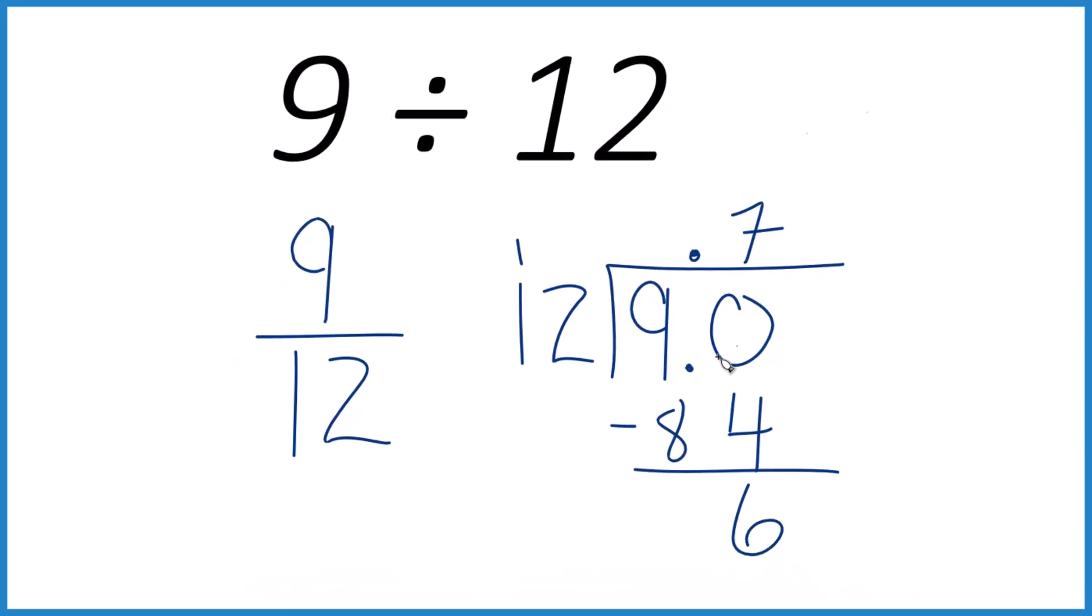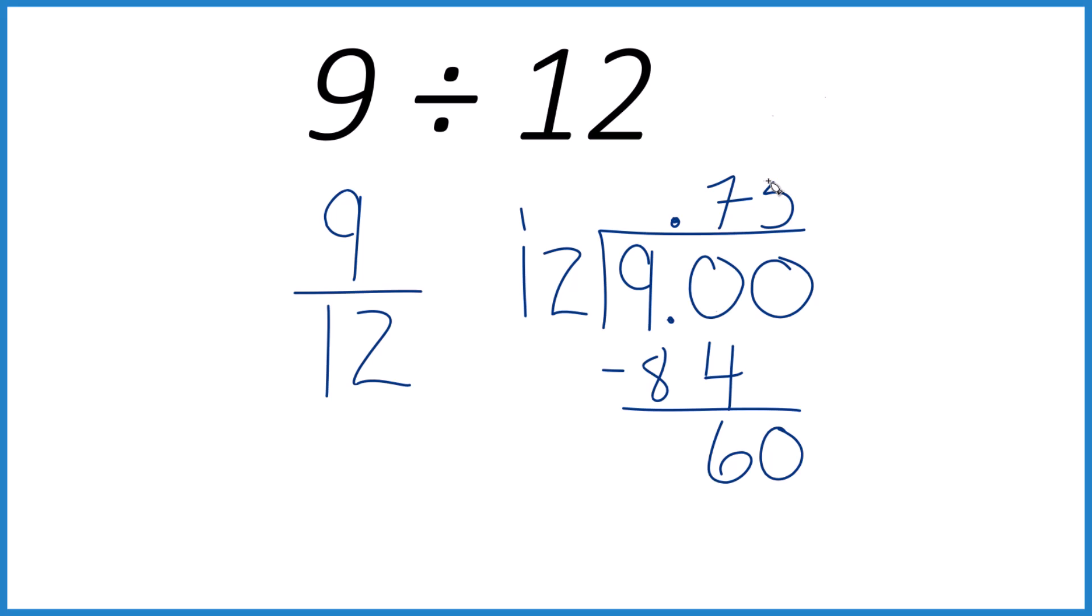And now we could call this 9.00. It's still 9. Move over a decimal place because then we could bring the 0 down. And 5 times 12, that's 60. Subtract. We get 0. No remainder.